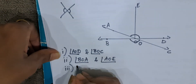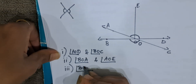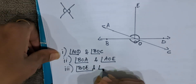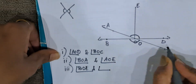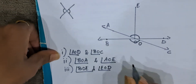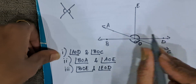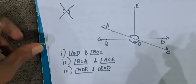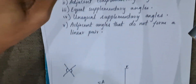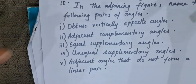So we write angle BOE and angle EOD. These are supplementary angles as well as equal, so the answer for the third part is correct.